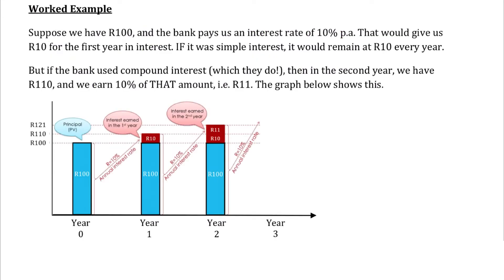Let's look at a very simple example with nice numbers. Suppose we have R100 and the bank is paying us an interest rate of 10% per annum. That means 10% of R100 is R10 — that's R10 for the first year. With simple interest it stays at R10 every year. But with compound interest, in the second year our opening balance is R110, so we earn 10% of R110, which is R11 — a whole extra rand of interest.